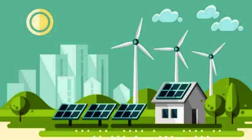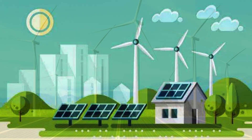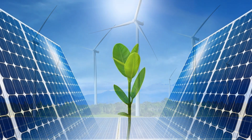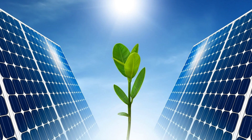Solar energy is harnessed from the sun's radiation using photovoltaic cells or solar panels. These panels convert sunlight directly into electricity through the photovoltaic effect. Solar energy can also be captured using solar thermal systems, where sunlight is used to heat a fluid that generates steam to drive turbines and produce electricity.